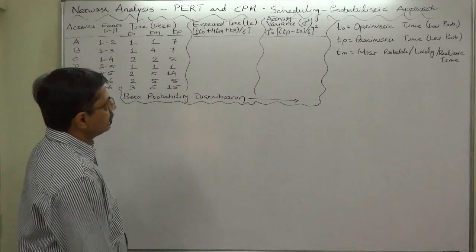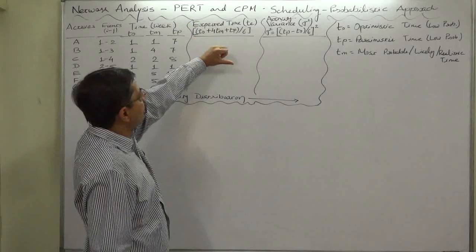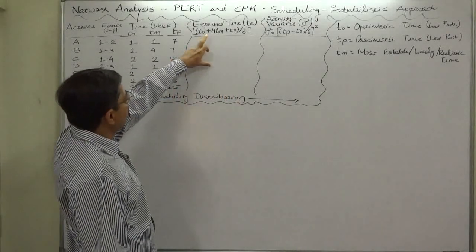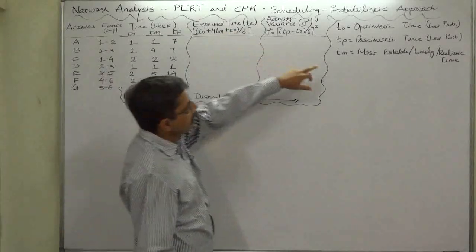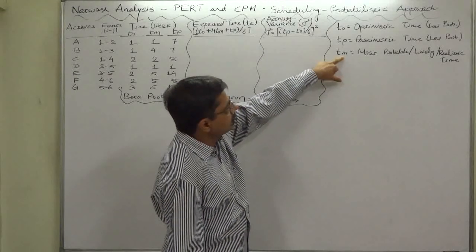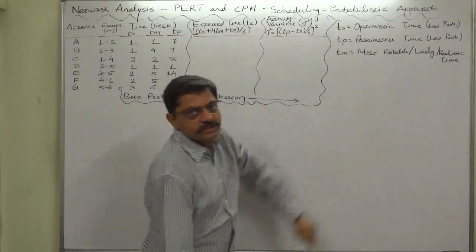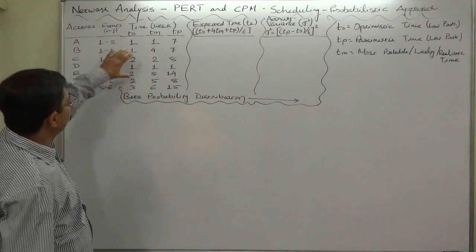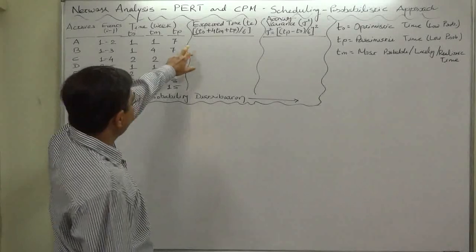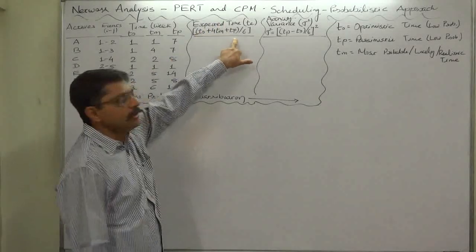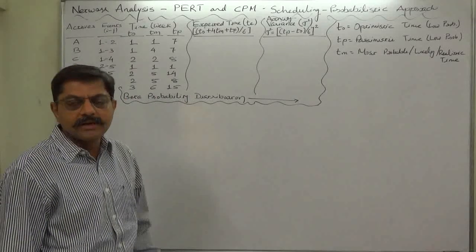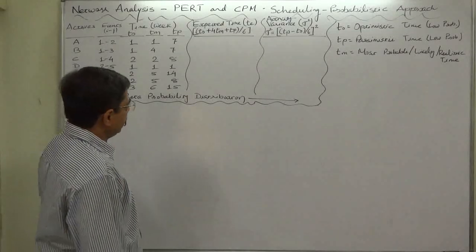The formula for expected time TE, based on this distribution, is: TE = (TO + 4TM + TP) / 6. On average, the probability of TM for an activity is 4 times that of TO and TP, which is why the weighted average of these three times is calculated. The weights are 1 for TO, 4 for TM, and 1 for TP, giving a total weight of 6. This is essentially a weighted average: sigma(x times w) divided by sigma(w).